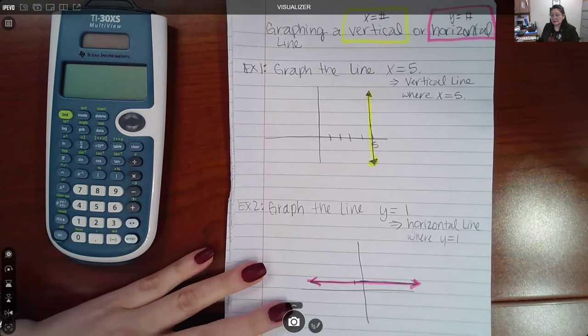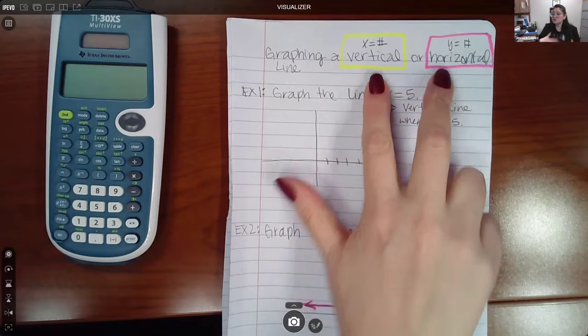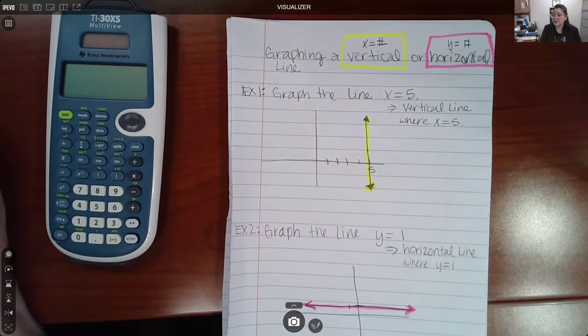And that is pretty much it. As soon as you know these two facts, you should be able to graph those horizontal vertical lines very quickly.